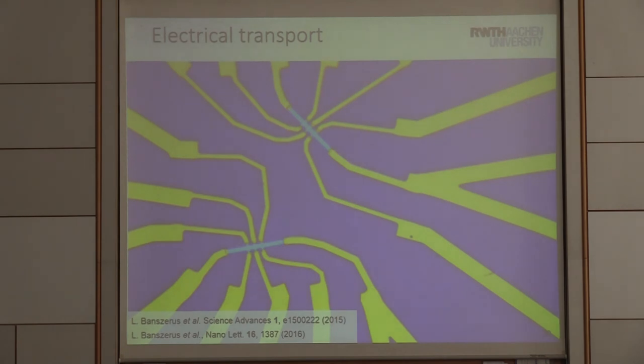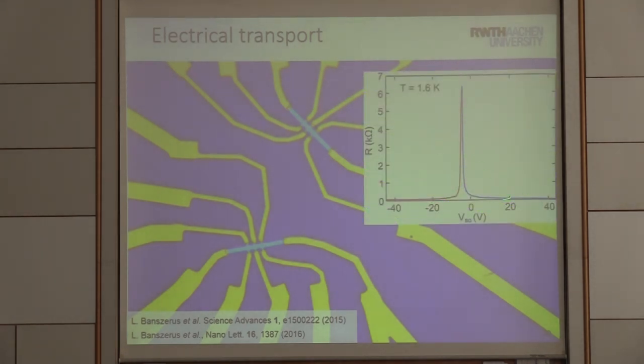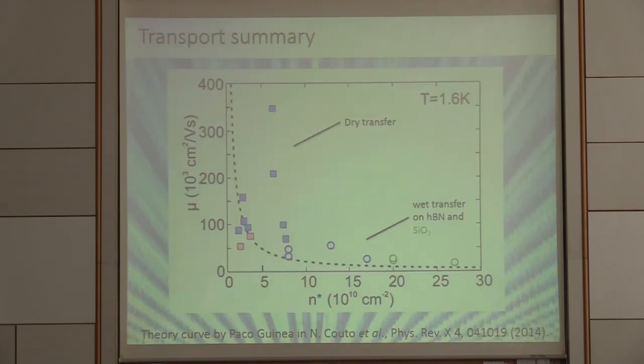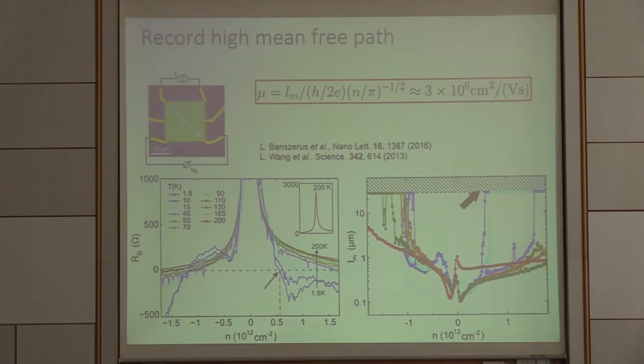We can make devices. We can do transport. These are typical curves at low temperature, room temperature. You see, many devices we make are routinely above 100,000 room temperature. This here has around 70,000.